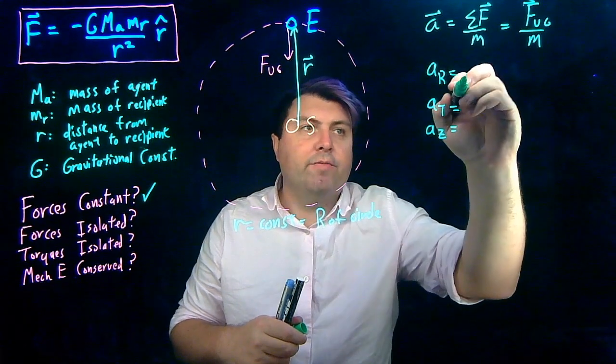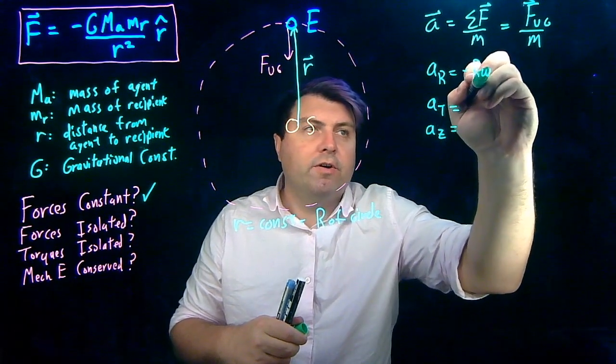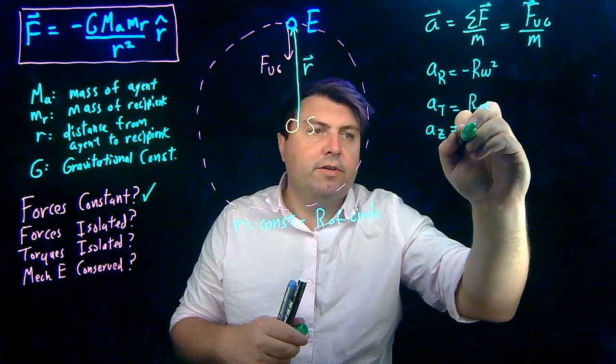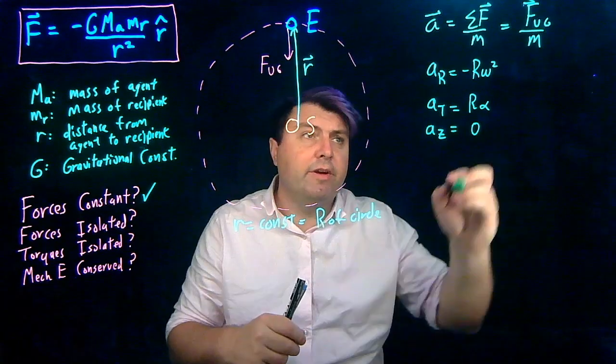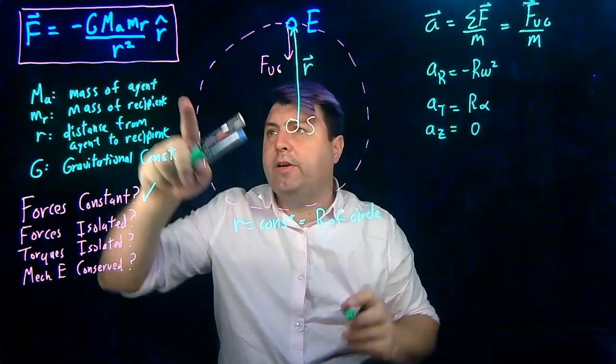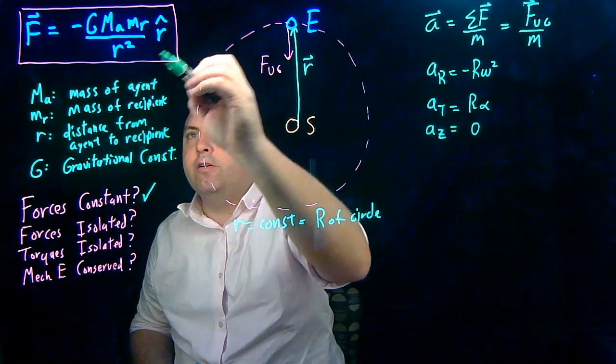And so we have in the radial direction, that's equal to negative r omega squared. In the t direction, it's equal to r alpha. And in the z direction, it's zero. These are acceleration constraints that we have.